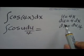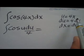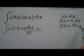And then we find a derivative of that, which is du is equal to 4 times dx. Solve for dx. We have dx is equal to du over 4.